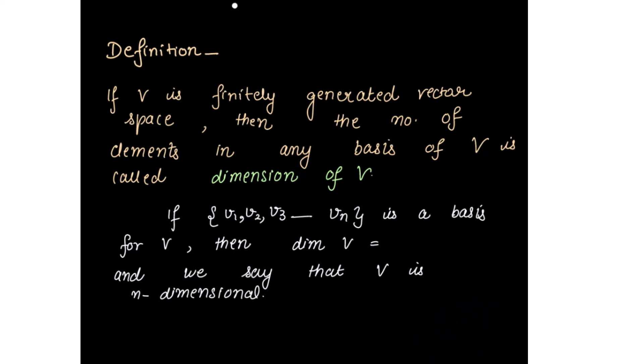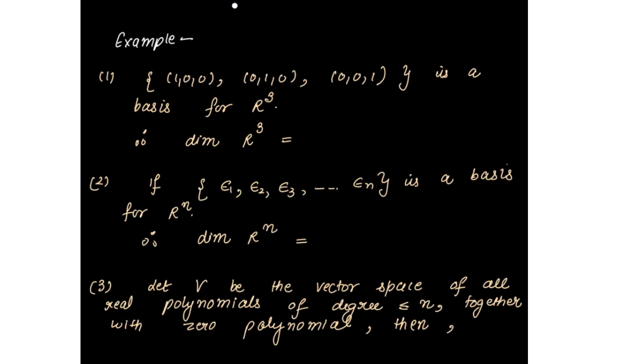In general, if V1, V2, V3 up to Vn is a basis for V, then the dimension of V equals n, and we say that V is n-dimensional. For example, {(1,0,0), (0,1,0), (0,0,1)} is a basis for R³, so the dimension of R³ is 3. Similarly, if ε1, ε2, ..., εn is the standard basis for Rⁿ, then the dimension of Rⁿ is n.